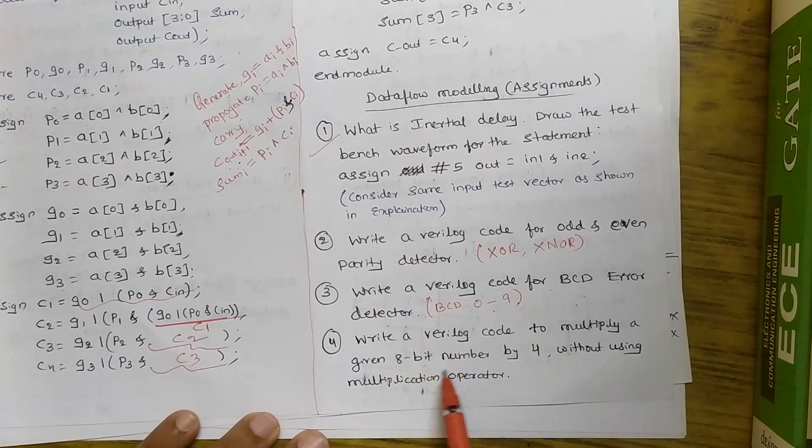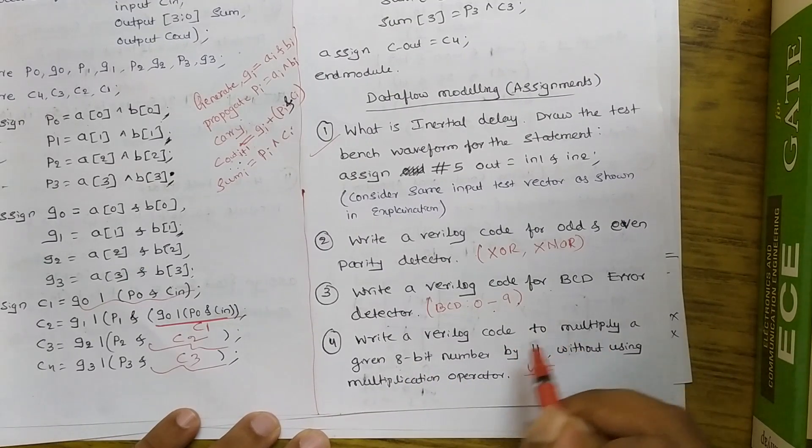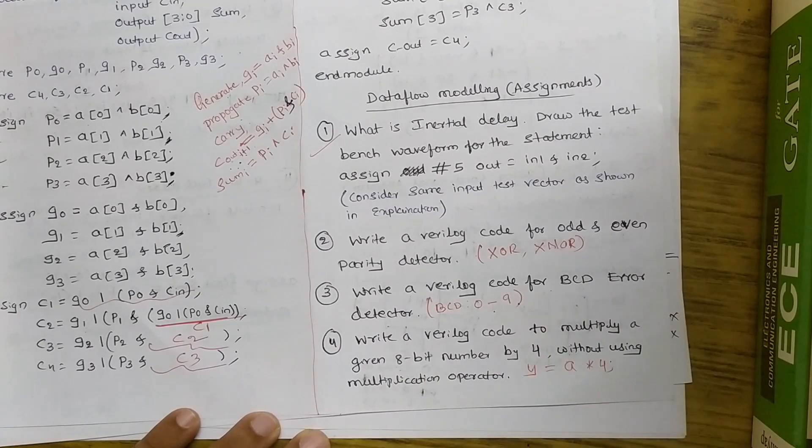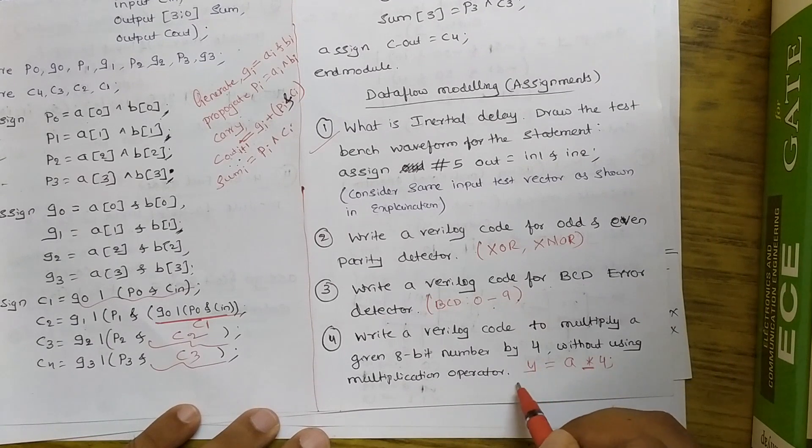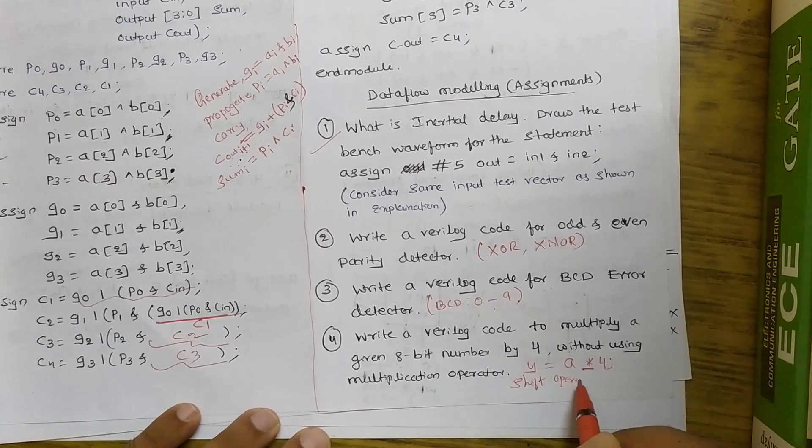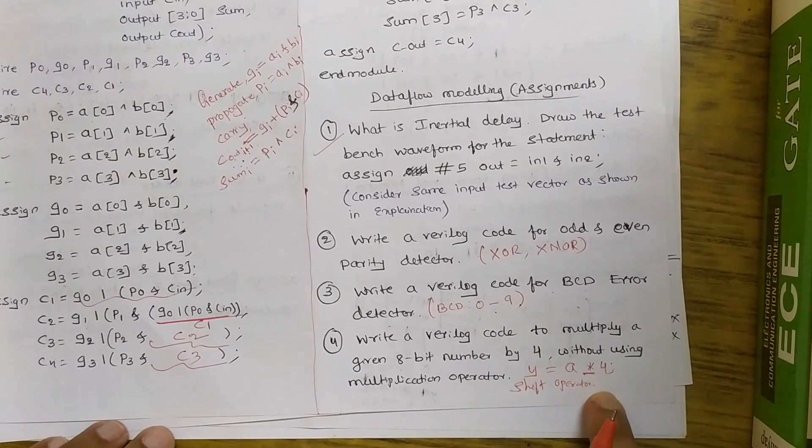And then the last one. Write a Verilog code to multiply a given 8 bit number by 4 without using multiplication operator. You are not supposed to use multiplication operator. For example y is equal to, let me take 8 bit number as A, A star 4. This is what I want to compute but without using this. So while explanation I had said that you can use shift operator. So try it out. And if you have any queries you are free to comment on this. Thank you.